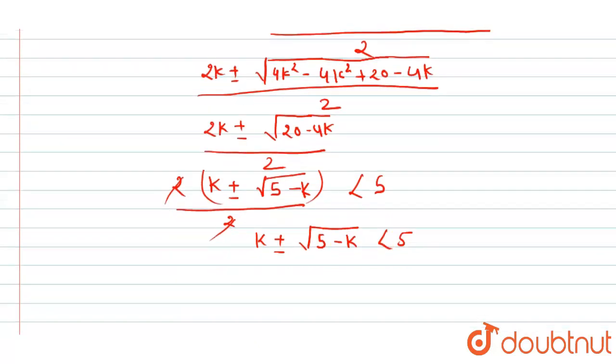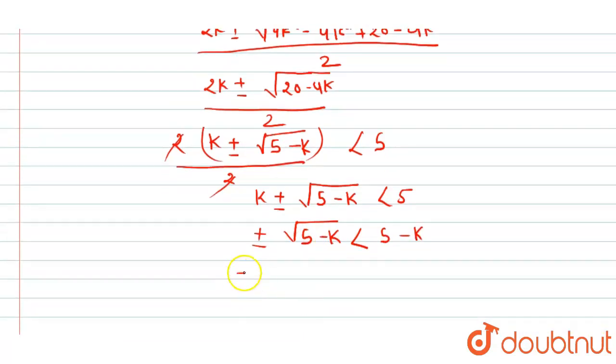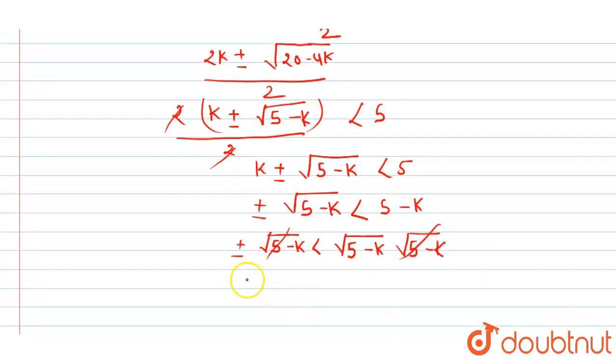We are able to write here that k plus minus square root of 5 minus k is less than 5. This becomes plus minus square root of 5 minus k is less than 5 minus k. This will cancel out. We will get plus minus 1 is less than square root of 5 minus k.